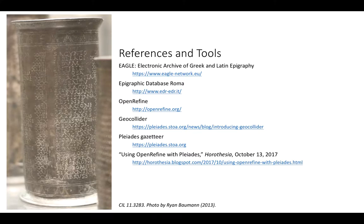We're going to try to take the text that appears on one of these cups and move it into a structured data environment so that we can map it and could potentially perform some kind of analysis on it, such as looking at the distance figures or something else. Along the way, we'll introduce a number of tools and make reference to some other information provided here.